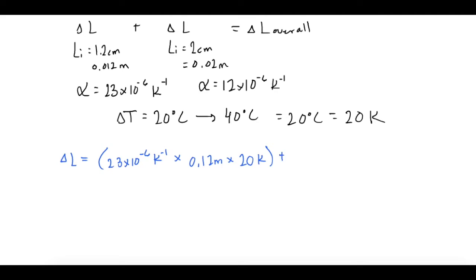And we're going to add the alpha for steel, which is 12 times 10 to the negative 6 inverse kelvin, multiply that by its initial length of 0.02 meters and times that by the temperature change of 20 kelvin.